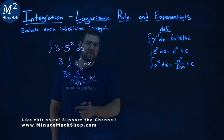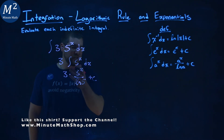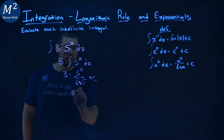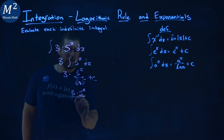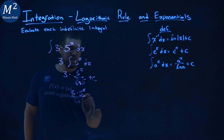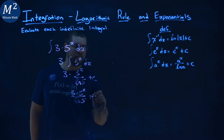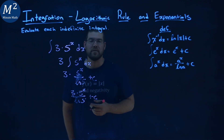We plug and play with our definition: we have 3 times 5 to the x power over the natural log of 5, then plus c. We can rewrite this to be one large fraction: 3 times 5 to the x power over the natural log of 5 plus c. And there we have it — our final answer.